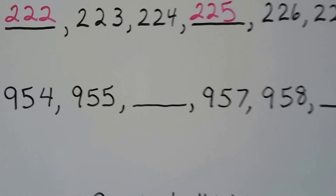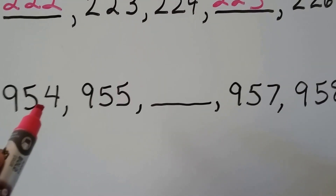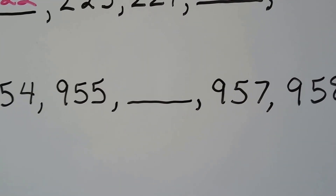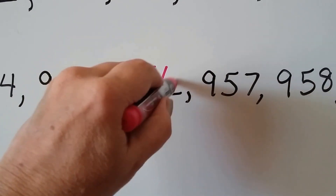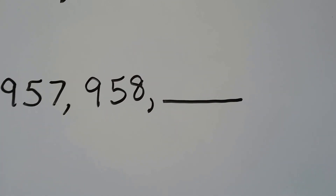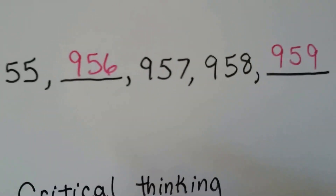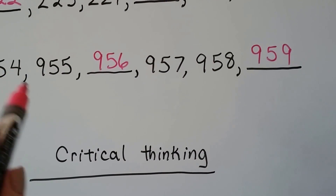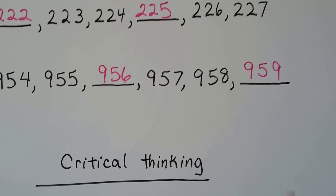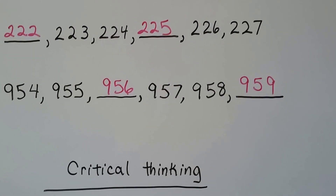Now let's try this one. We've got a missing number here and a missing number at the end. We've got 954, 955 — do you know what goes there? If you said 956, you're right. 957, 958. What's missing? 959. See how the ones place just kept going up by 1 because we're counting: 4, 5, 6, 7, 8, 9. The hundreds and tens stayed the same, and the next number after 959 would be 960.